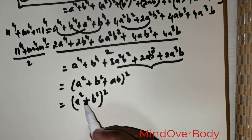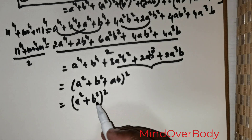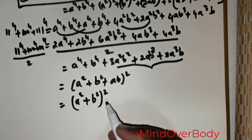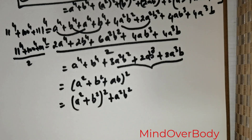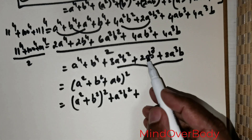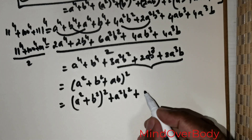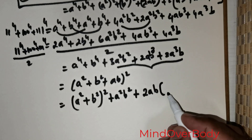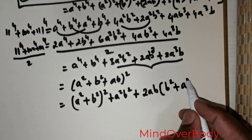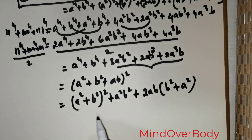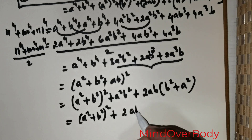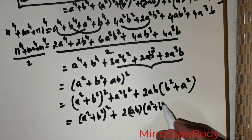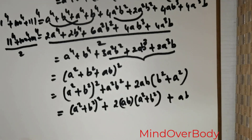If I were to expand (A squared positive B squared) squared, I get A to the power 4, positive B to the power 4, positive 2 times A squared times B squared. So I have a 2A squared B squared term. To get the 3A squared B squared I need, all I need to do is add one more A squared B squared. Then from AB cubed and A cubed B, I take 2AB out, giving me AB squared and A squared respectively, so those terms become 2AB times (A squared positive B squared).